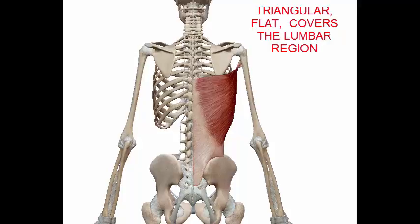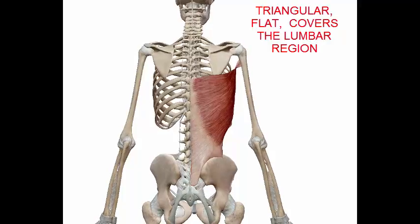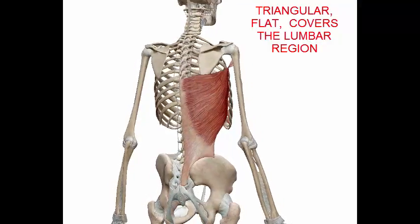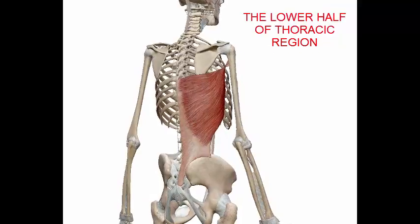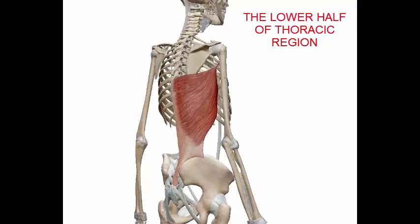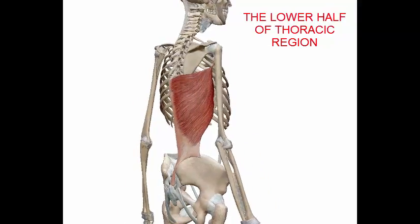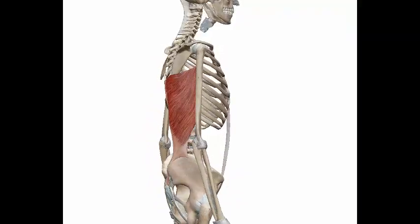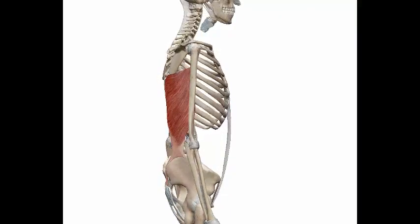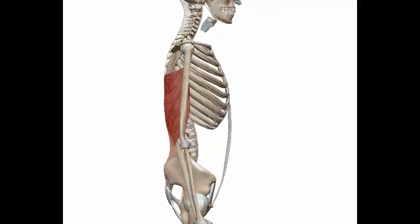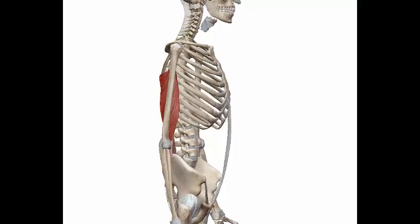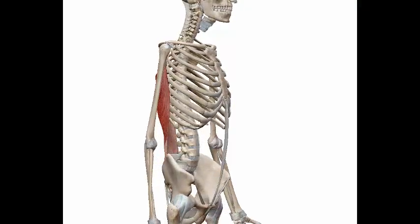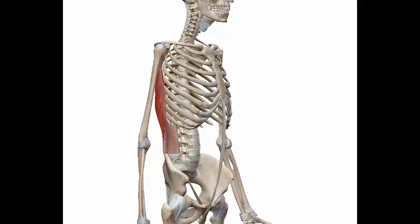The latissimus dorsi is a triangular flat muscle that covers the lumbar region and the lower half of the thoracic region, and is gradually contracted into a narrow fasciculus at its insertion into the humerus.